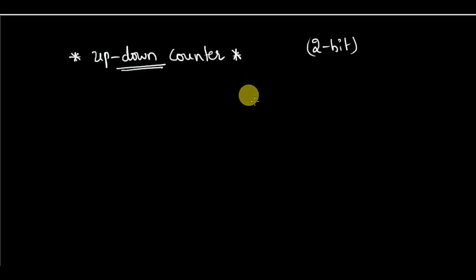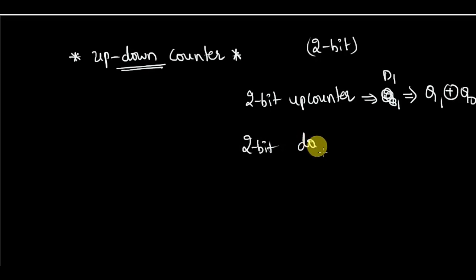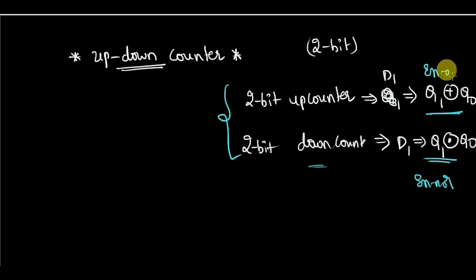So the idea is, if you recall the previous video for two-bit up-counter, the circuit is same, but for D1, I am giving Q1 XOR Q0 as my input for D1. But whereas in two-bit down counter, now in the present video, you have seen that for D1, I am giving Q1 XNOR with Q0 as the input. Now, the only thing that is changed is only these two cases. One is XOR and other is XNOR. This is XNOR and this is XOR.